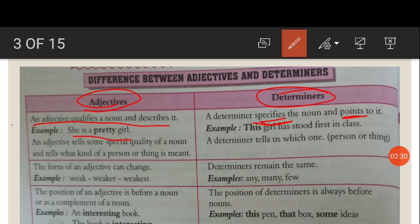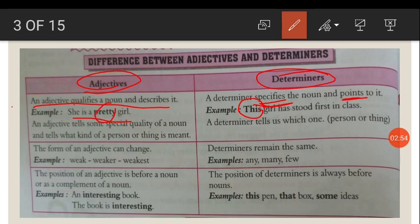For example: 'She is a pretty girl' — here 'pretty' is an adjective. 'This girl has stood first in class' — here 'this' is a determiner. An adjective tells special qualities of a noun — what kind of person or thing is meant. A determiner tells us which one: this, that, etc.